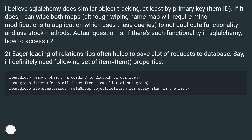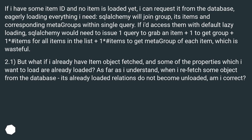Two: eager loading of relationships often helps to save a lot of requests to the database. I'll definitely need a certain set of item properties. If I have an item ID and no item is loaded yet, I can request it from the database, eagerly loading everything I need. SQLAlchemy will join group, its items and corresponding metagroups within a single query. With default lazy loading, SQLAlchemy would need one query for the item, one for the group, one for items in the list, and one for the metagroup of each item — which is wasteful.